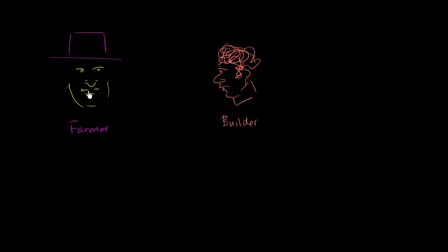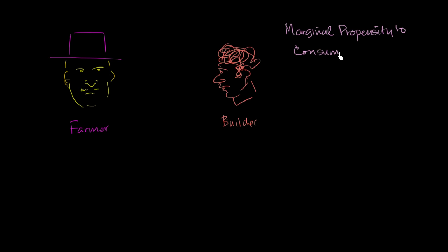For the sake of what we're going to do here, let's say that for this economy it's a constant: if either of these fellows gets an extra dollar to spend, he is going to spend 60% of it. I'm going to introduce a formal word for that. In this economy, the marginal propensity to consume — often referred to as MPC — is equal to 60%, or 0.6. All this is saying is that if someone in this economy finds another dollar in their pocket, they're going to spend 0.6 of that, or 60% of that.